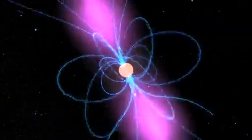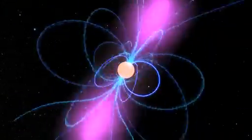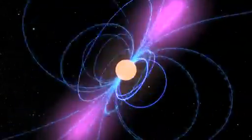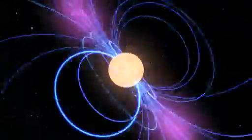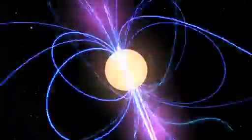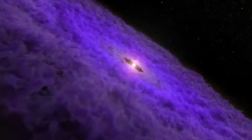A neutron star is what remains when a star several times the mass of the Sun collapses and explodes. With more than the Sun's mass packed into a sphere less than 18 miles across, these objects are incredibly dense. Just a sugar cube-sized piece of neutron star can weigh as much as all the water in the Great Lakes.